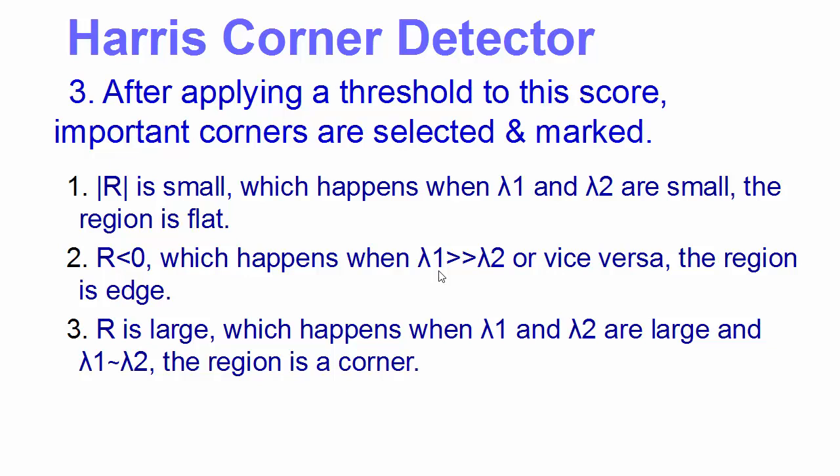And if the value of R is large, which happens when λ₁ and λ₂ are large, this means that this region is a corner. So if the value of R is very large, that means the region is a corner. That's how Harris corner detector detects if it's a corner, an edge, or a flat area.